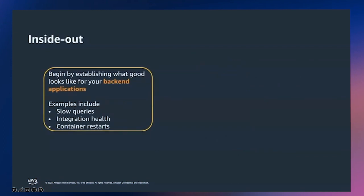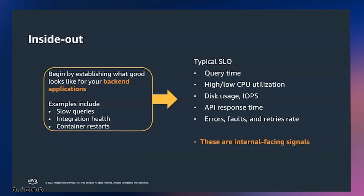The inside-out approach begins with establishing what good looks like to your backend applications. Examples include slow queries to your database or the overall integration health of your infrastructure — and if you're running modern applications, the health of your containers. SLOs to monitor here include query time for databases, CPU utilization, disk usage, API response time, and error, fault, and retry rates. These are all internal-facing signals.